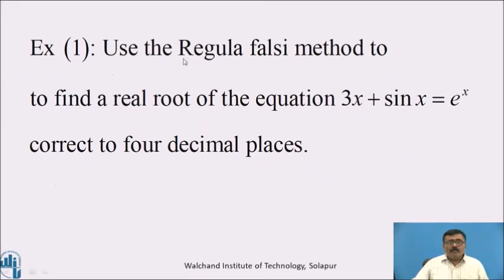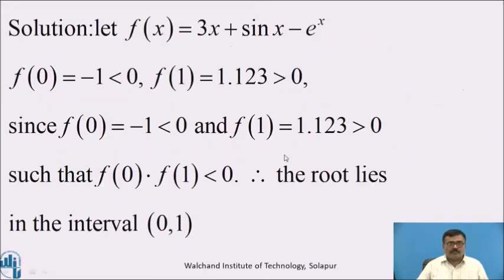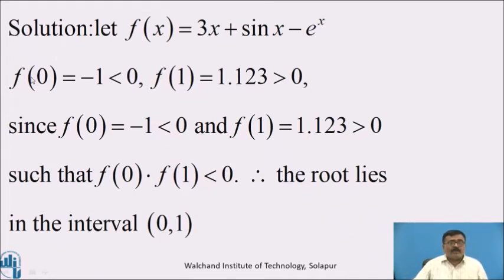Come to an example. Use the Regula Falsi method to find the root of the equation 3x + sin(x) = eˣ, correct to 4 decimal places. Solution: let f(x) = 3x + sin(x) − eˣ. First, we have to find the interval by putting x = 0, 1, 2, 3, and so on, where the sign of f(x) changes either from positive to negative or from negative to positive.